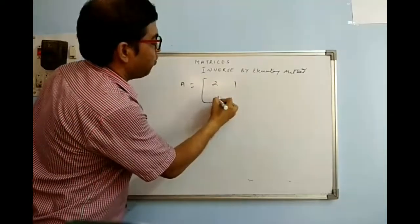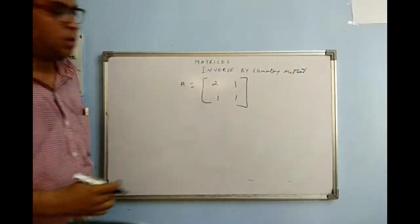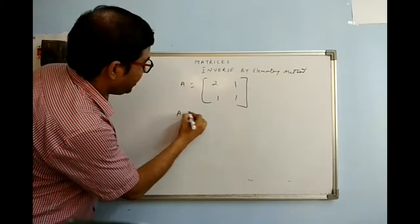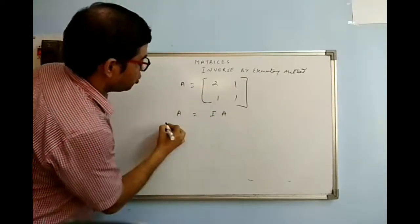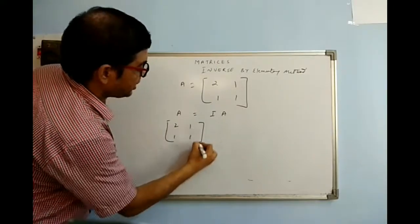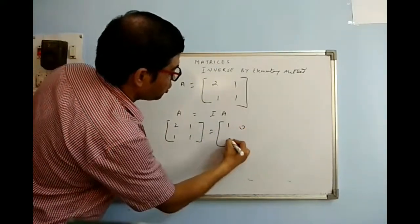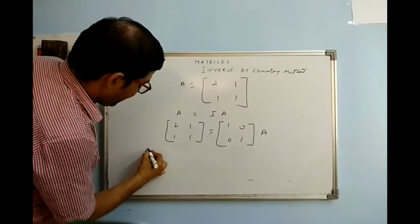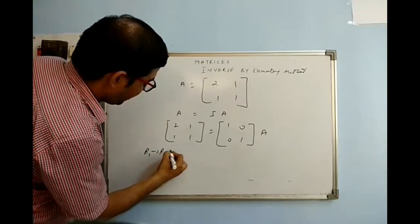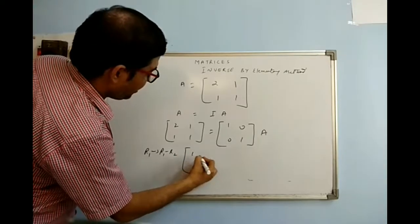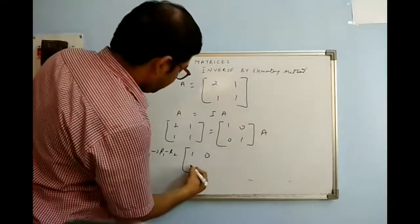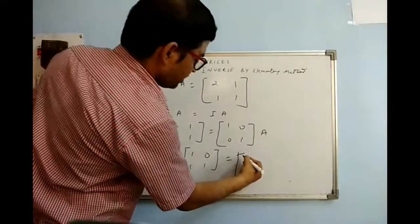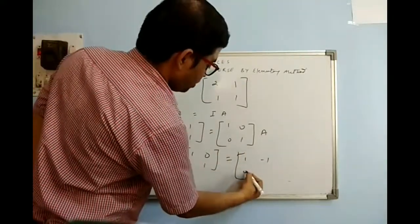The matrix is [2, 1; 1, 1]. I have to find its inverse. Same method I will follow: A = I·A, so [2, 1; 1, 1] = [1, 0; 0, 1]·A. I have to make a 1 here; at R1 I will go for R1 minus R2, so it will be [1, 0; 1, 1] on the left and [1, −1; 0, 1]·A.